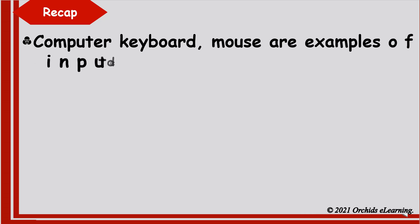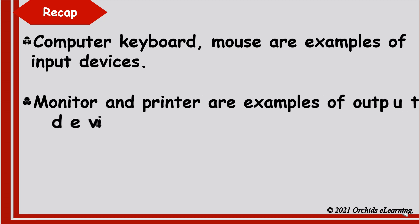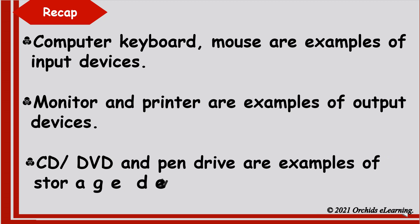Let's recap. Keyboard and mouse are examples of input devices. Monitor and printer are examples of output devices. CD or DVD and pen drive are examples of storage devices.